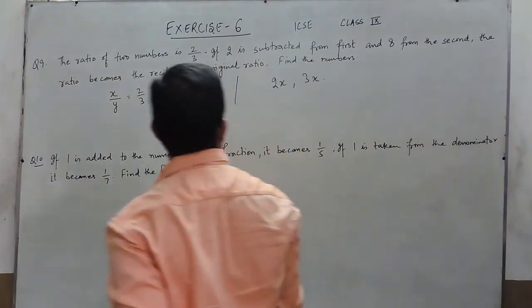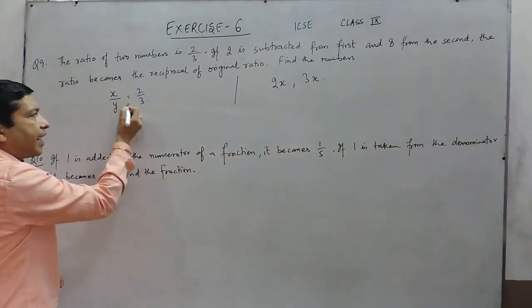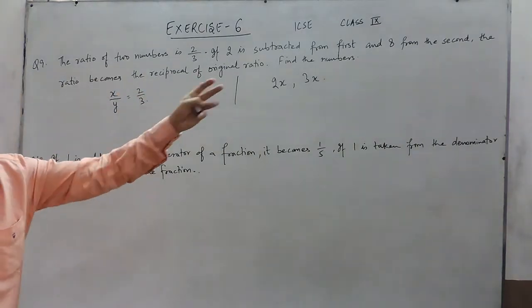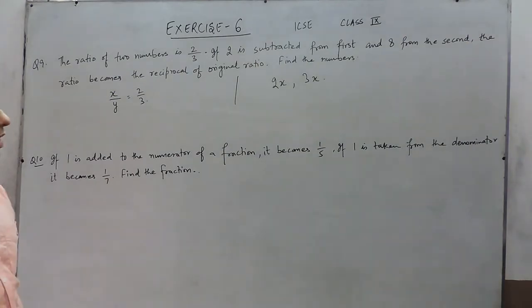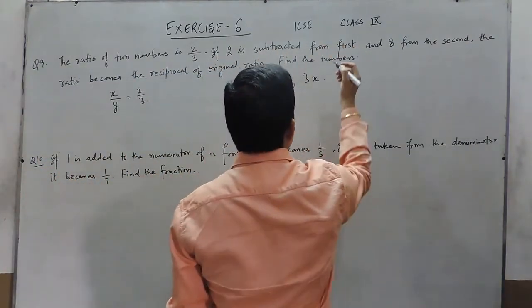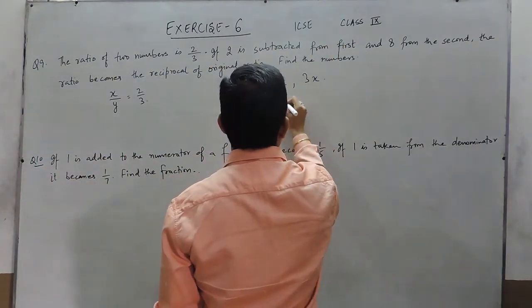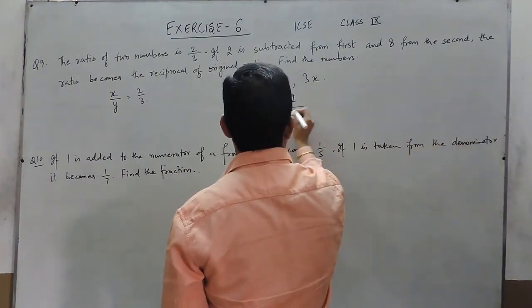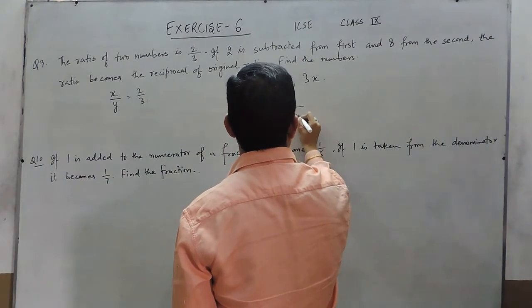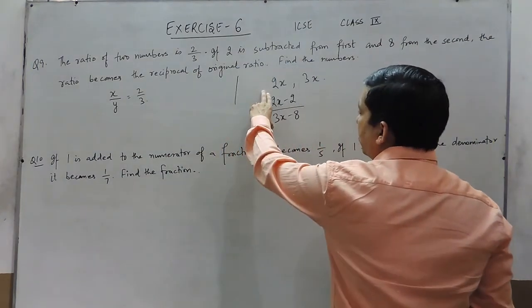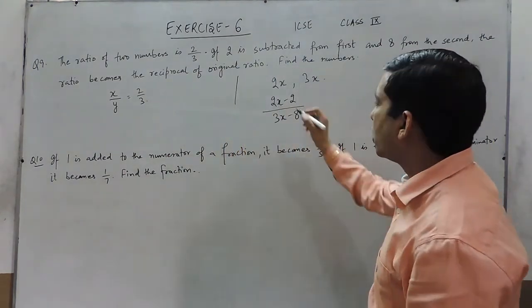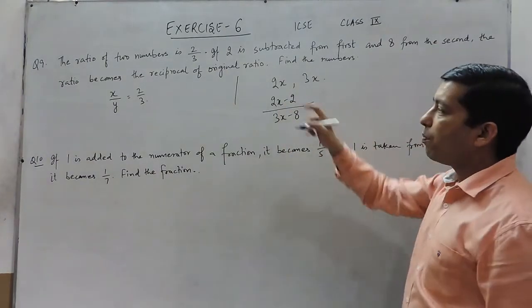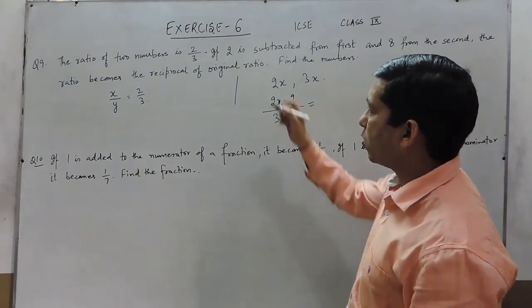In both ways we can think about it, because if we take x and y the ratio is 2 upon 3, or we can directly take the numbers as 2x and 3x. Now if 2 is subtracted from the first, that means 2x minus 2, and 8 from the second, that means 3x minus 8. So the ratio of the two numbers becomes 2x minus 2 upon 3x minus 8, and it is given that the ratio becomes the reciprocal of the original ratio.